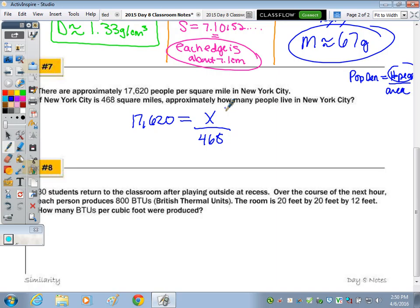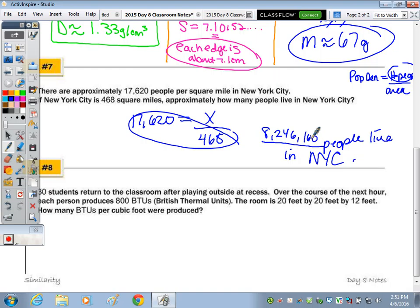And we have... How many people live in NYC? Can anyone read that answer to me? 8 million. 8,246,160. But I don't know if this statistic is true. I don't know if this piece of data is true.